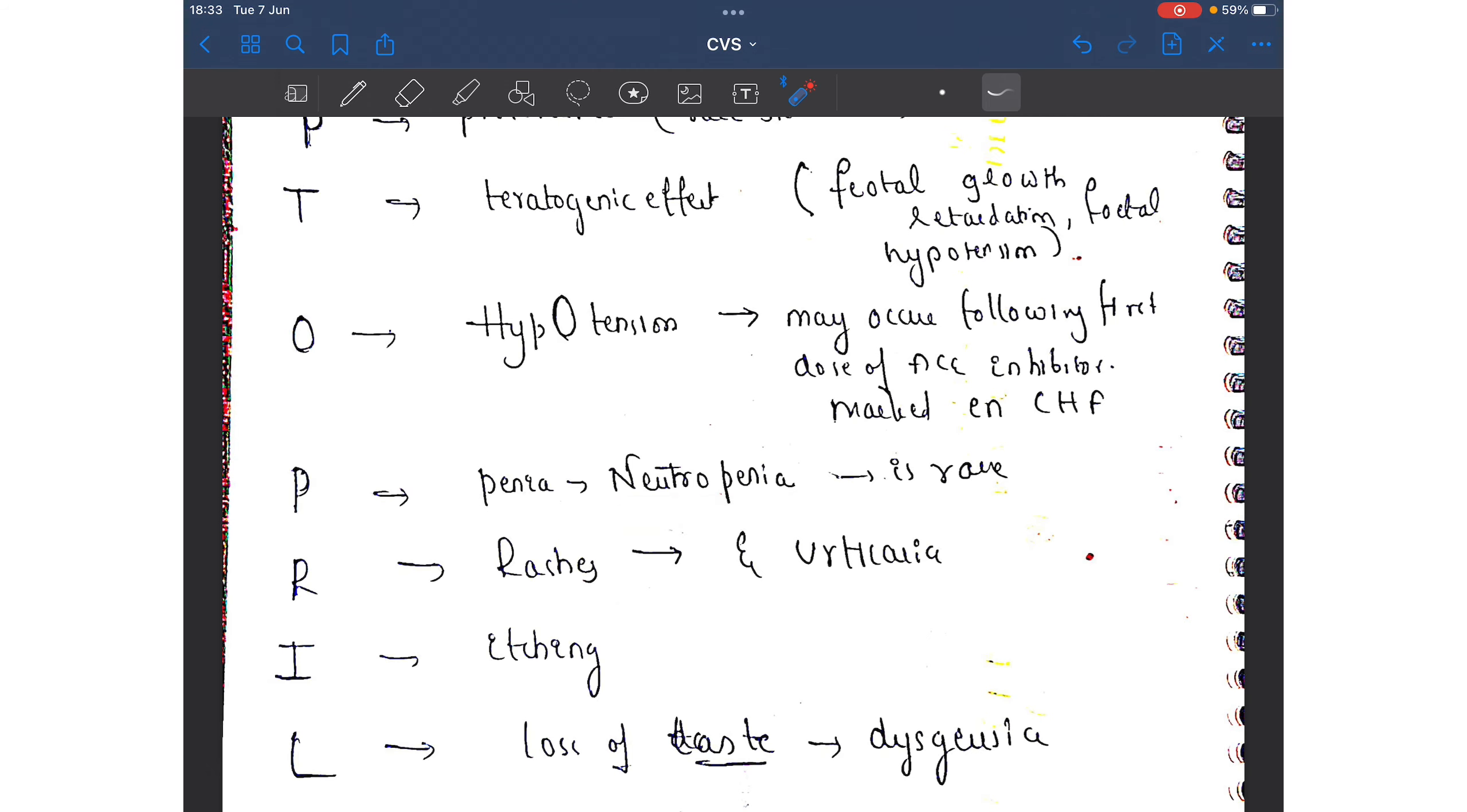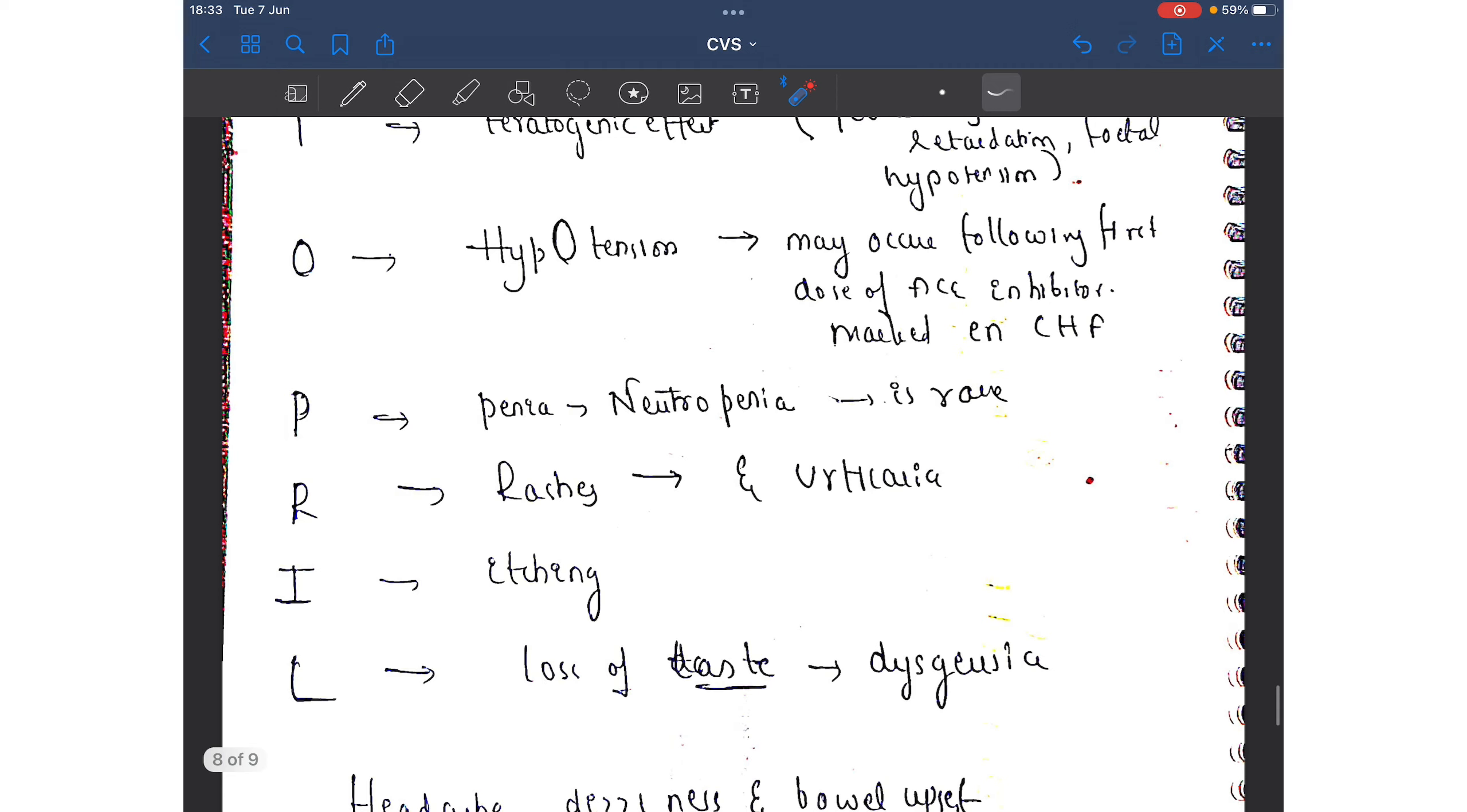Next side effect is neutropenia, reduced neutrophil counts. It is a rare condition. Rashes, urticaria we can see. I stands for itching and L stands for loss of taste, that is also called dysgeusia.